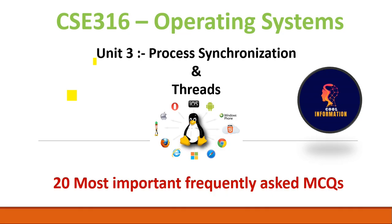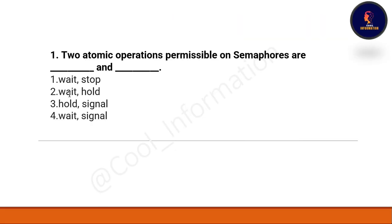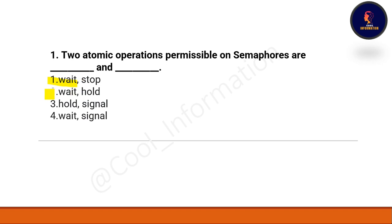Question number one of Unit 3: the two atomic operations permissible on semaphores are blank and blank. Option 1: wait and stop. Option 2: wait and hold. Option 3: hold and signal. Option 4: wait and signal. The correct option is option 4 — wait and signal. Two atomic operations permissible on semaphores are wait and signal.